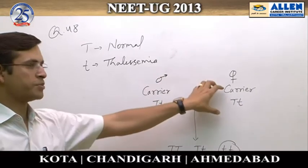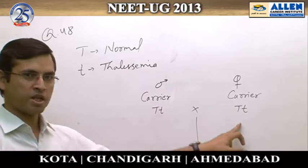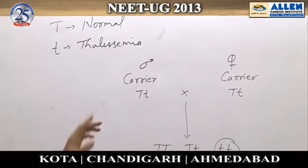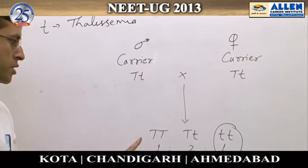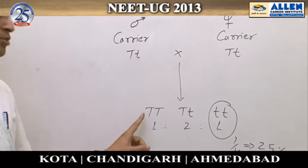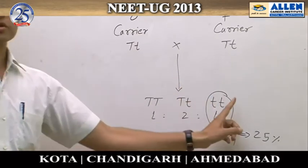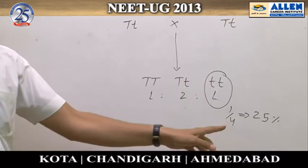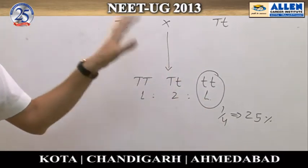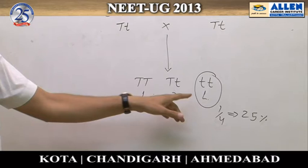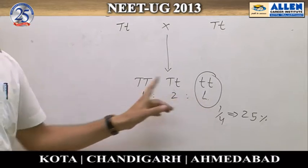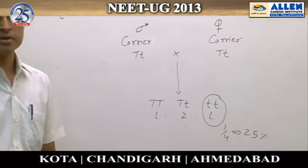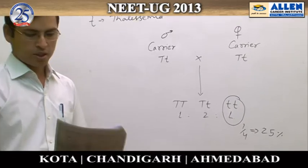Both parents are normal carrier parents with a heterozygous genotype. If both parents are heterozygous, the results will be TT, Tt, and tt in a ratio of 1:2:1. So the chance of thalassemia from these two carrier parents is one out of four, meaning one-fourth or twenty-five percent.